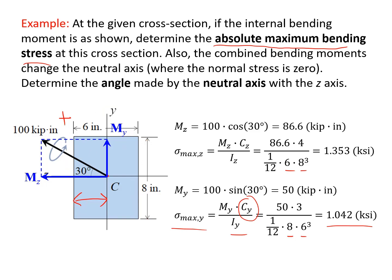After these preparation calculations, the question is: how do we combine them to achieve the combined bending stress and determine the absolute maximum bending stress? Also, the combined bending will change the neutral axis. The neutral axis is where the normal stress is zero, and we need to determine where that neutral axis is, as well as the angle it makes with the z-axis.